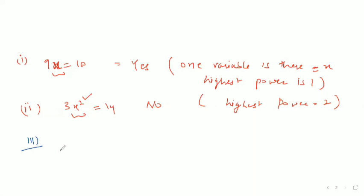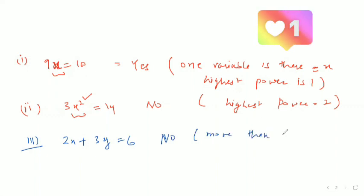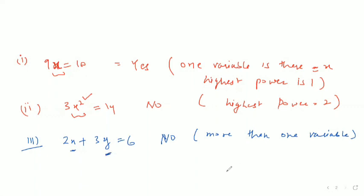Third part: 2x + 3y = 6. Is it a linear equation in one variable? Of course not, because more than one variable is there — x and y, two variables are given. That's why it is not a linear equation in one variable.